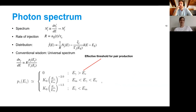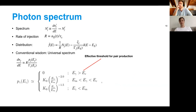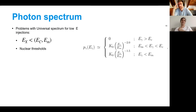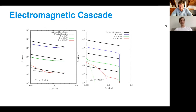The conventional wisdom is that no matter what you inject, no matter what model you have, it gets reprocessed into the same spectrum — thermally processed by background particles — giving what's known as the universal spectrum. However, in our case the universal spectrum breaks down for a couple of reasons: first, your injected energy might be below the threshold energy for pair creation; and you might also drop below certain nuclear thresholds. So for these light injections, comparing nuclear constraints with the universal spectrum versus what we calculate properly, you get orders-of-magnitude differences.